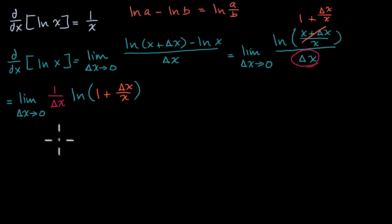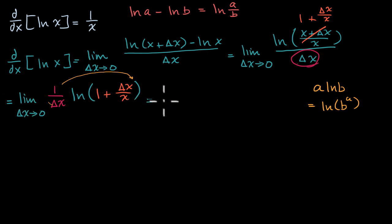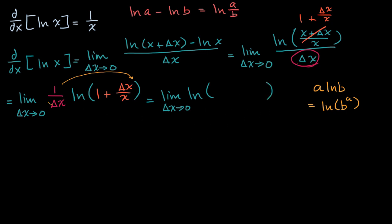Now we can use another exponent property. If I have a times the natural log of b, that is equivalent to the natural log of b to the a. So here, one over delta x would be the a in that case. I could bring that out and make it an exponent. So this is all going to be equal to the limit as delta x approaches zero of the natural log of one plus delta x over x to the one over delta x power.